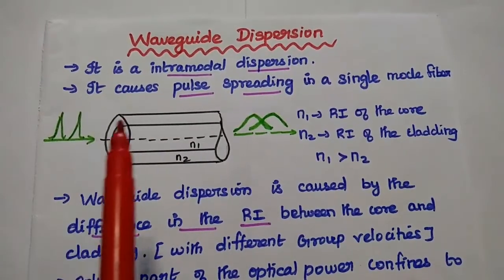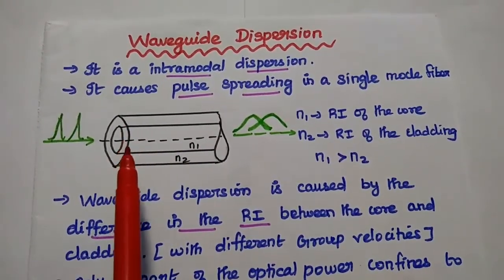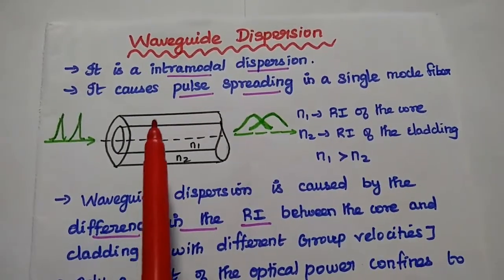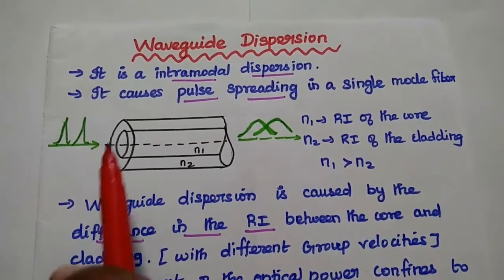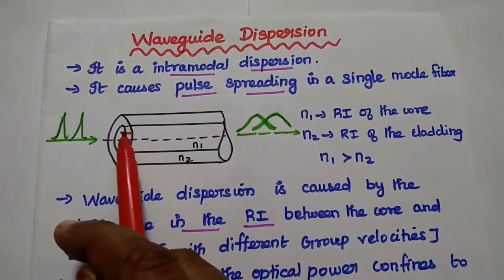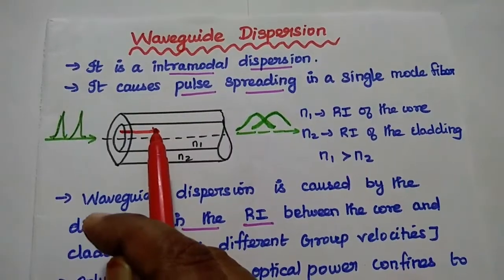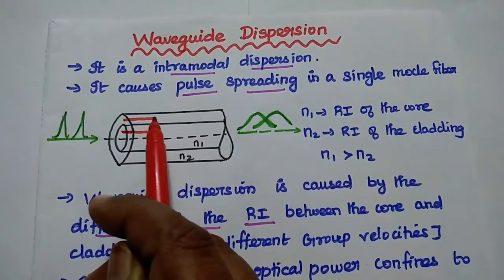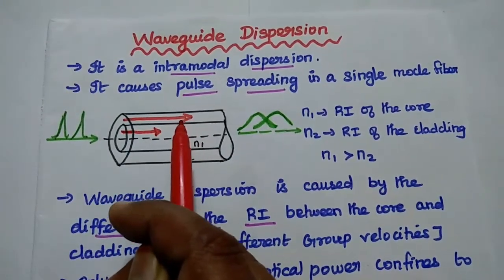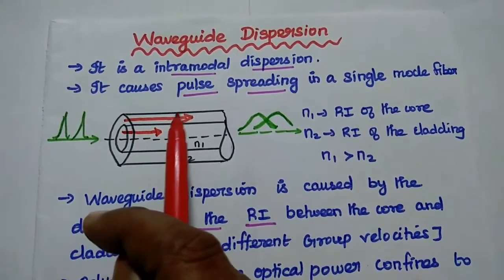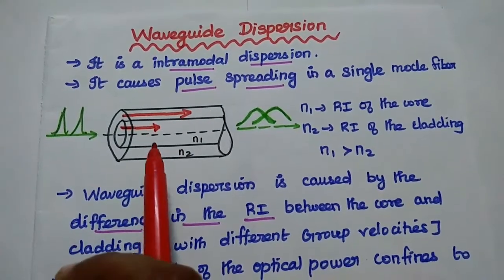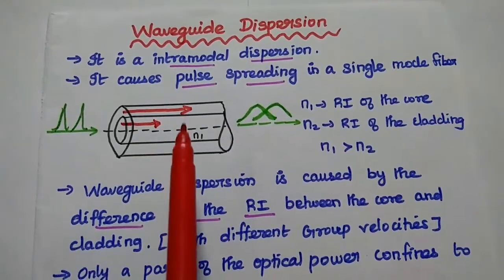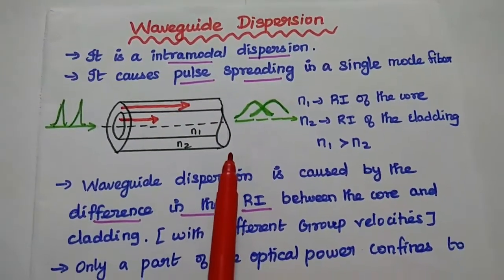When the input signal is applied, part of the optical energy is confined in the core; the remaining is transmitted through the cladding. For example, 80% of the optical energy is confined in the core and 20% is propagating through the cladding. The propagation of light signal in the cladding is faster than in the core, so the variation in group velocities also affects the signal at the output side.